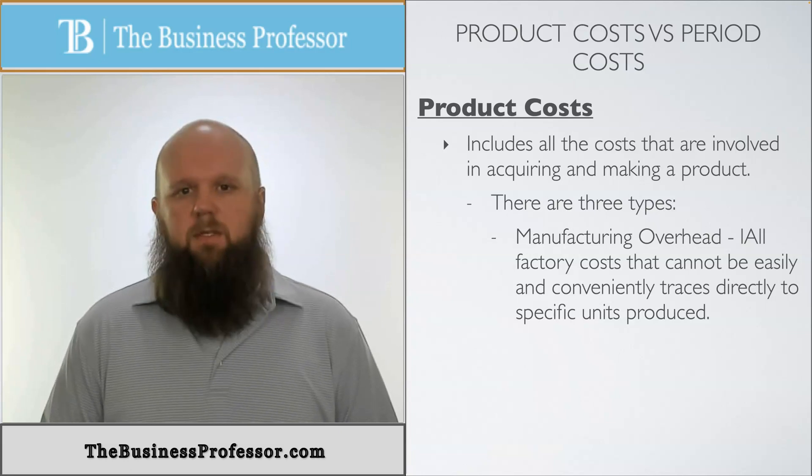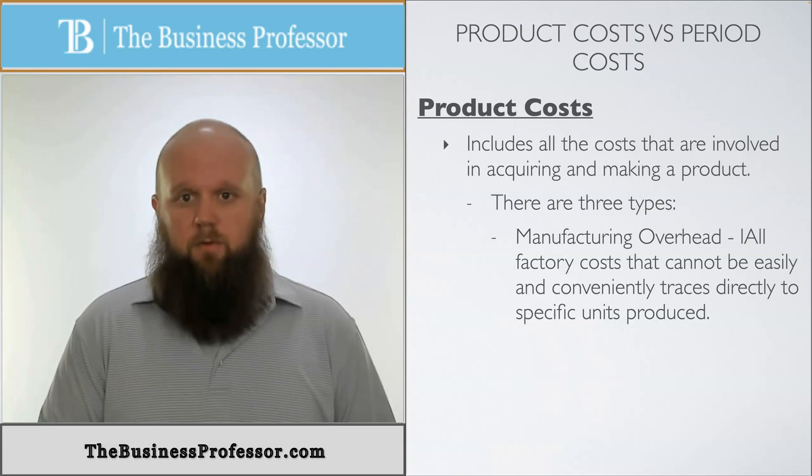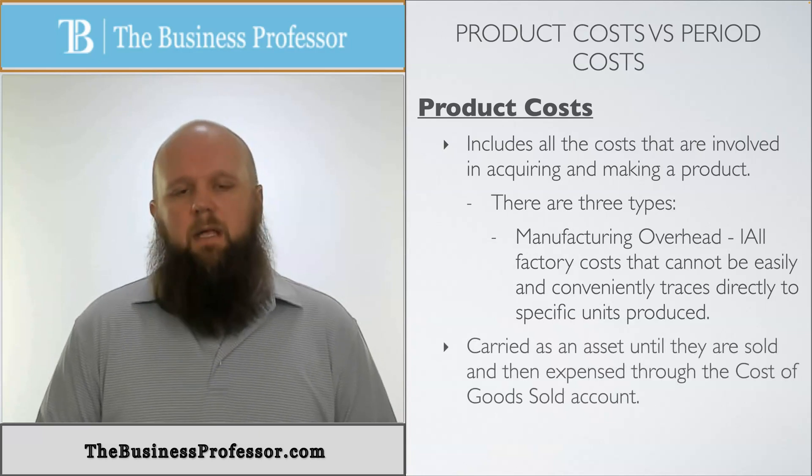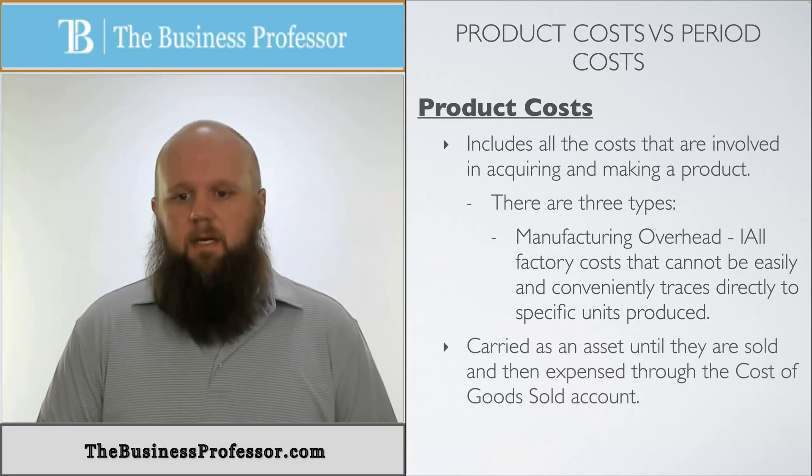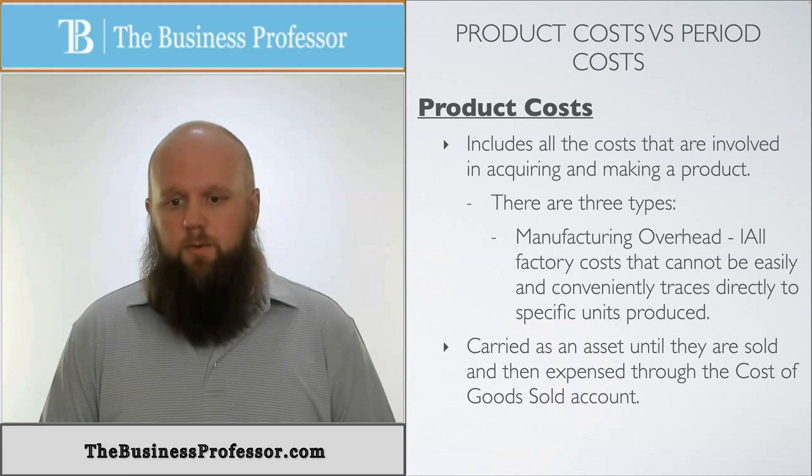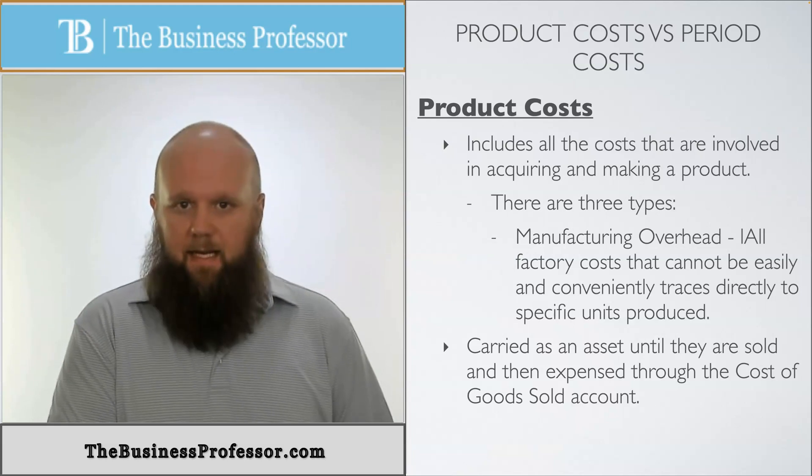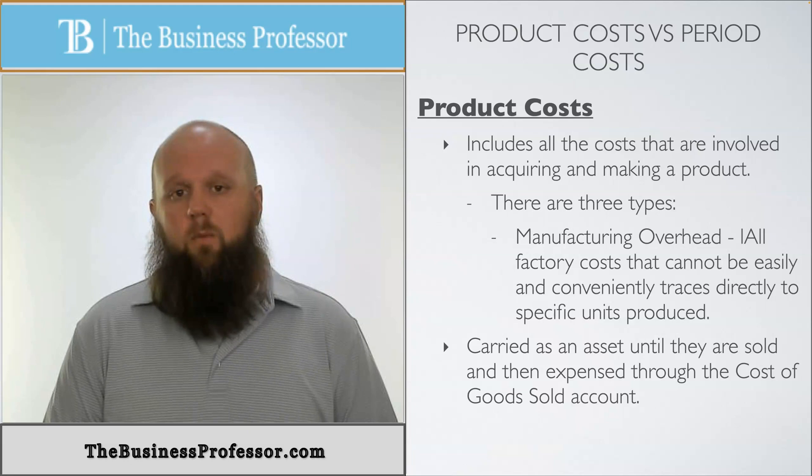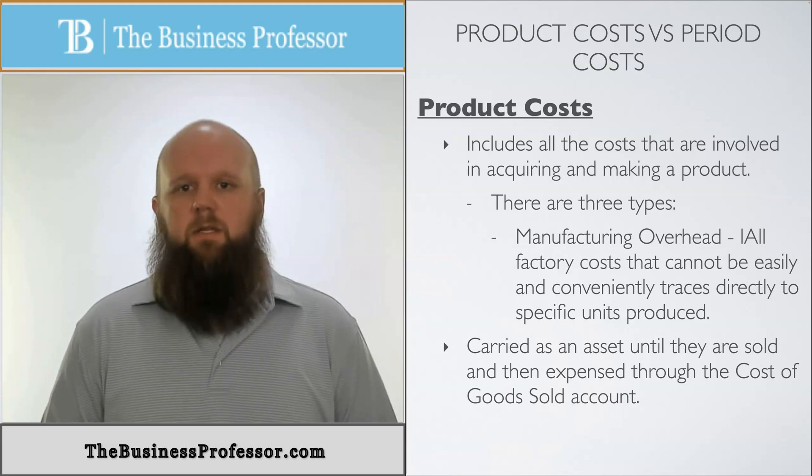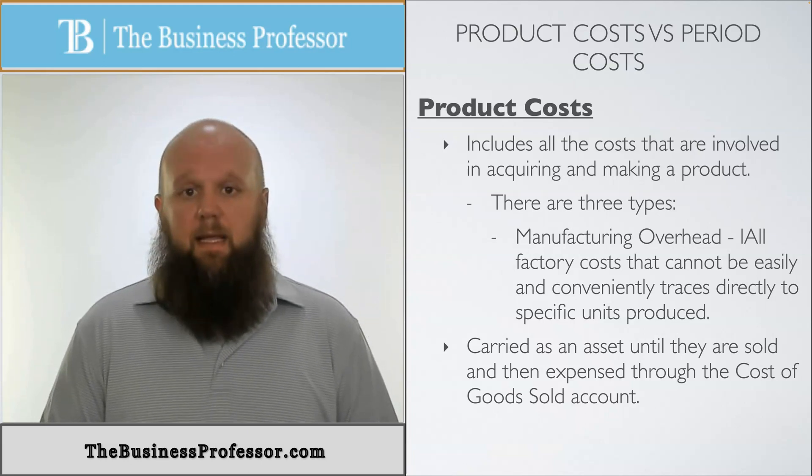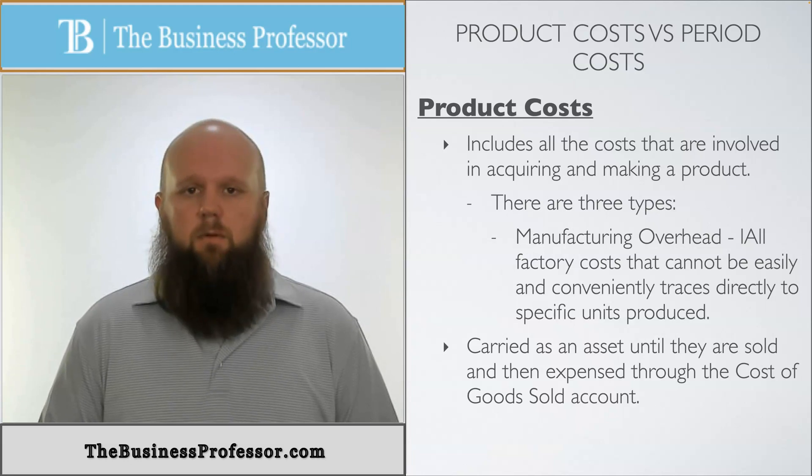For the building of the house, an example of this would be nails or the hammer. Now these are all carried as an asset until the final product is sold. So we're going to keep it on our balance sheet as an asset until the final product is sold. And once it's sold, then we're going to expense it through the accounting account called cost of goods sold, which is an account we talked about in financial accounting.